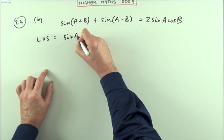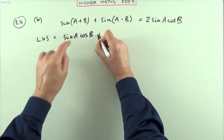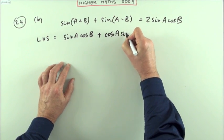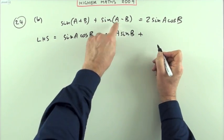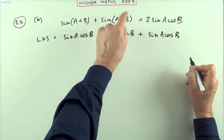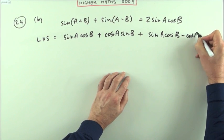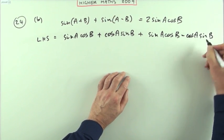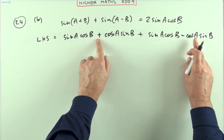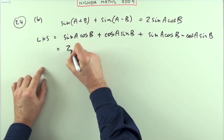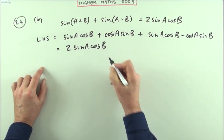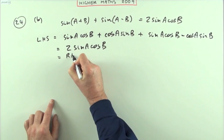So sin(A+B): sinAcosB plus cosAsinB. Sin(A-B), same thing: sinAcosB but minus cosAsinB. Then some parts will go. CosAsinB, cosAsinB, positive negative. I'm just left with two of those. So that just equals two lots of sinAcosB, which equals the right hand side.